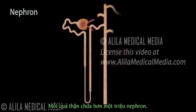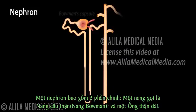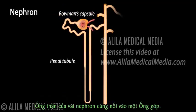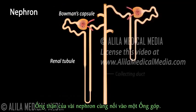Each kidney contains over a million nephrons. A nephron is composed of two major parts: a capsule known as the glomerular capsule, or Bowman's capsule, and a long renal tubule. Renal tubules of several nephrons connect to a common collecting duct.